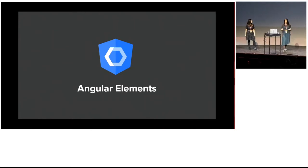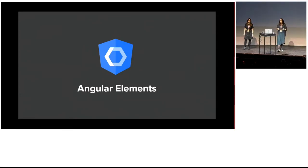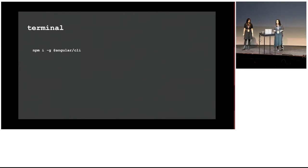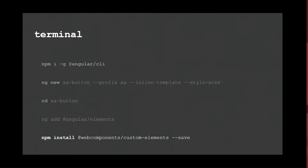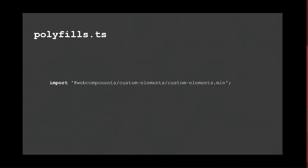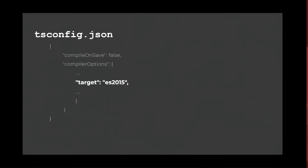First of all, how do we build a web component with Angular? Thanks to the Angular team, they have built Angular Elements, which allows us to build a web component with Angular using all the tooling and ecosystem that Angular provides. To get started: first, we need to have Angular installed. Then we generate a new project — the flags we've used here are just personal preferences, you don't need them for Angular Elements. Then we go into our directory, add Angular Elements, and import the web components custom elements polyfills into our polyfills.ts file. In our tsconfig.json, we need to change the target to ES2015, so that browsers that can natively read web components can detect this.